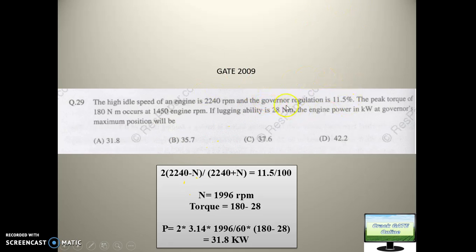Governor regulation is given, which means governor sensitivity is given. So sensitivity equals N1 at no load condition, which is 2240, minus N, any arbitrary value, divided by N1 plus N2 by 2. The 2 will go up, so 2 times 2240 minus N divided by 2240 plus N. When you solve this, you will get RPM of 1996 RPM. So ideal speed was 2240 RPM, but due to load that value got reduced. And now RPM value is 1996 RPM. So at this RPM and at this torque you have to calculate the power value.